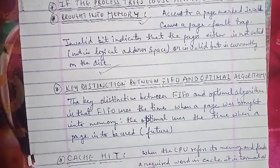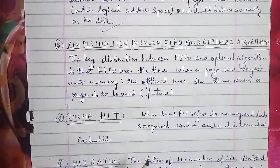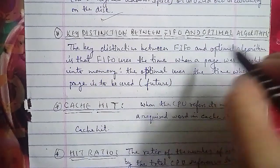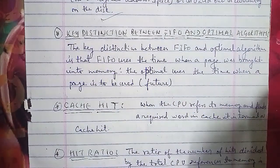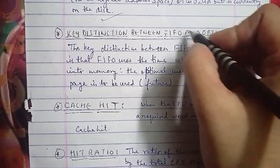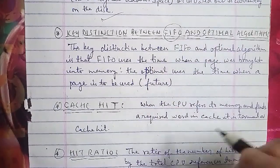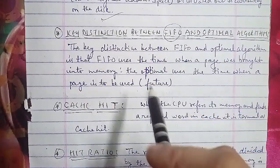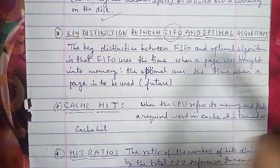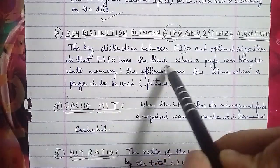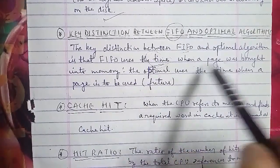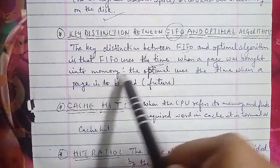Key distinction between FIFO and the optimal algorithm: FIFO uses the time when a page was brought into memory, while the optimal algorithm uses the time when the page is to be used in the future.